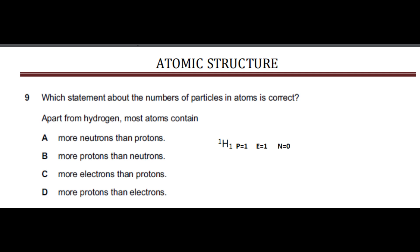The option says more neutrons than protons. Before reading the options, let me explain that hydrogen is element 1-1 in the periodic table. The protium isotope of hydrogen has one proton, one electron, and zero neutrons. That means the nucleus of the hydrogen atom has just one proton and no neutrons.